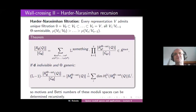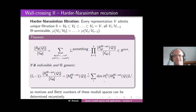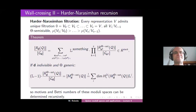So the motives and Betti numbers of such moduli spaces can now be determined recursively. You can actually write a very short computer program for computing Betti numbers of moduli spaces with the aid of this formula — my computer program is less than 10 lines of Maple code and runs in an ancient version of Maple. This is actually a very simple formula for computing invariants of these moduli spaces. And all this is really just formally equivalent to the existence of the Harder-Narasimhan filtration.